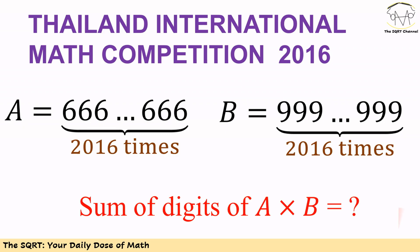Hello everyone. In this video we are going to talk about a problem from the Tiger International Math Competition 2016. In this problem we have two numbers A and B, both of them are 2016-digit numbers. For A we have only sixes in the digits, and for B we have only nines in the digits. We want to find the sum of the digits in A times B.